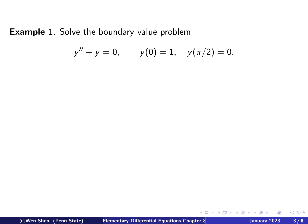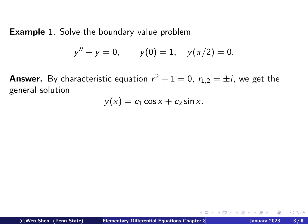Our first example is the boundary value problem: y double prime plus y equals zero, with boundary conditions y(0) = 1 and y(π/2) = 0. The characteristic equation is r squared plus 1 equals zero, giving roots ±i, pure imaginary. So the general solution is c1 cosine x plus c2 sine x.